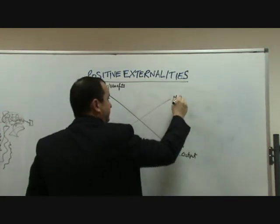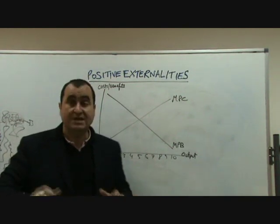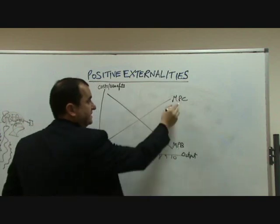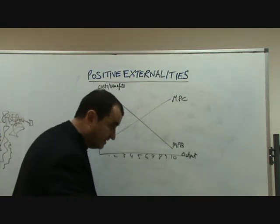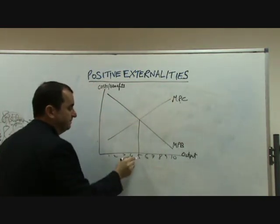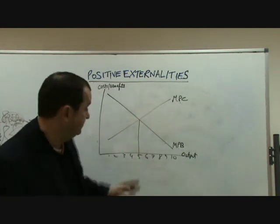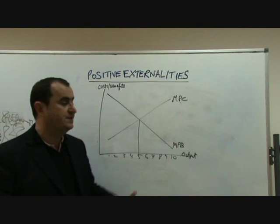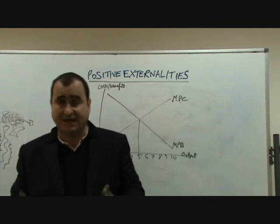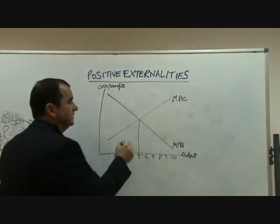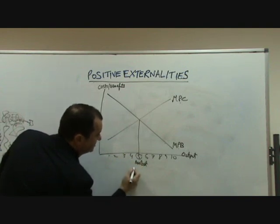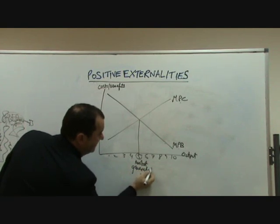Marginal private cost rises. If we leave things to market forces, people will consume up to the point where their marginal private benefit equals their marginal private cost. That will be the last unit they consume. In this example, the last unit is the fifth unit — it brings in as much private benefit as it does private cost. No one would consume the sixth unit, which brings in more cost than benefit. That would be irrational. So we call this the market-generated output level.